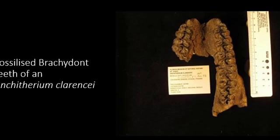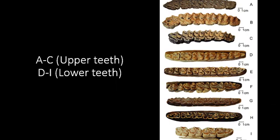With the passage of time, the brachyodont teeth of horses evolved to hypsodont, meaning that the low crown teeth evolved to high crown teeth. Here, from A to C, these are the hypsodont teeth of the upper jaw of different species of horses, and from D to I are the hypsodont teeth of the lower jaw of different species of horses.